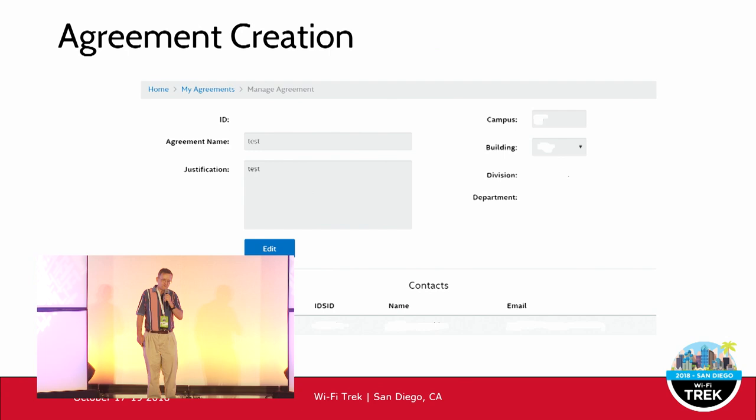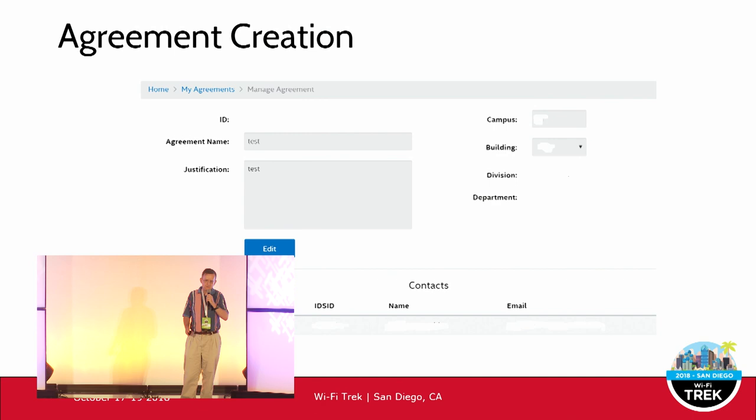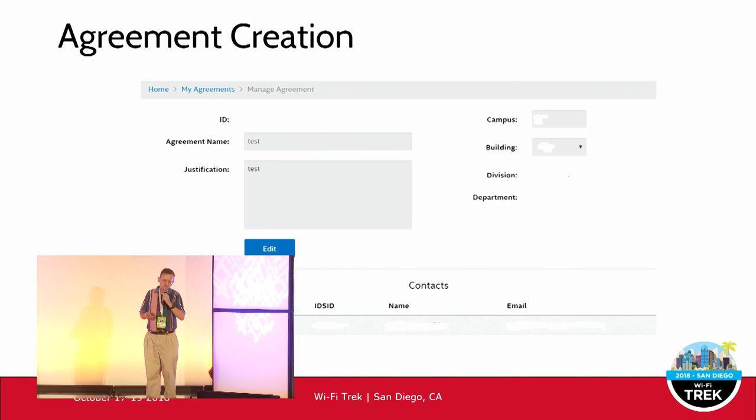This is the initial part of the creation process where you create an agreement. You give it a name, provide a brief justification describing the lab, and enter general location information: the campus, the building, and what division you're working in.